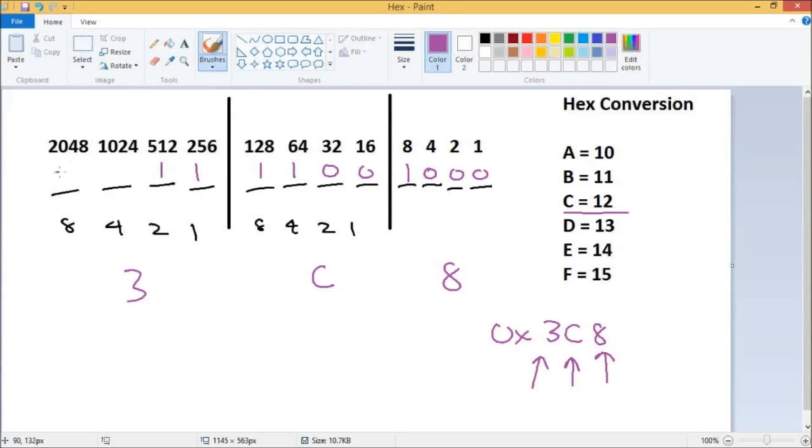So 3C8, let me just draw those out for you. And then 3, boom boom, 2 plus 1 is 3, so those will all be off. So all we need to do is add up the placeholders where we have a 1: 512 plus 256 plus 128 plus 64 plus 8.